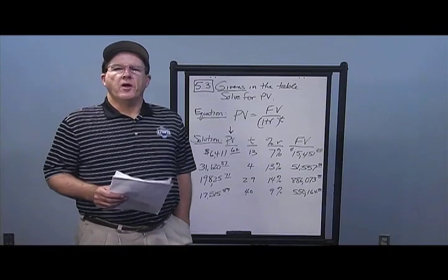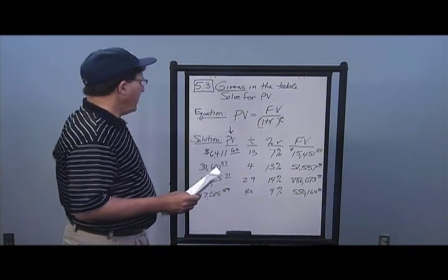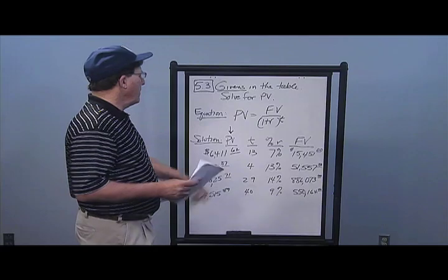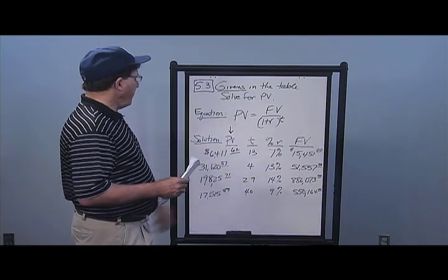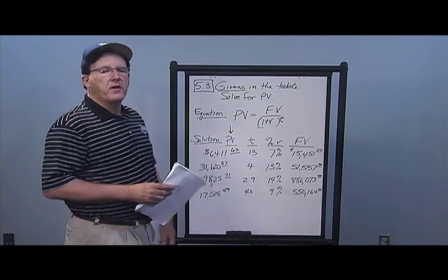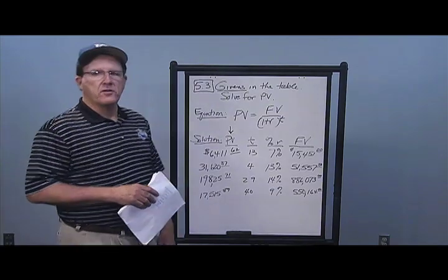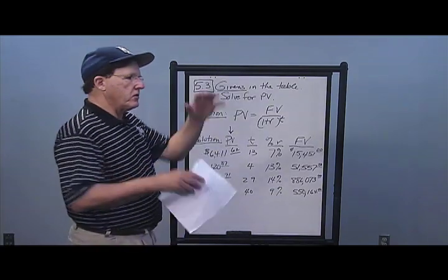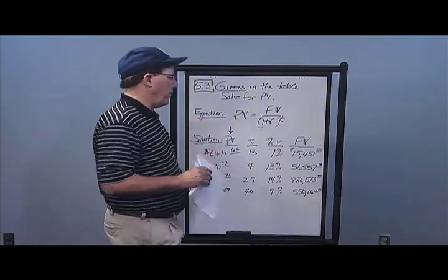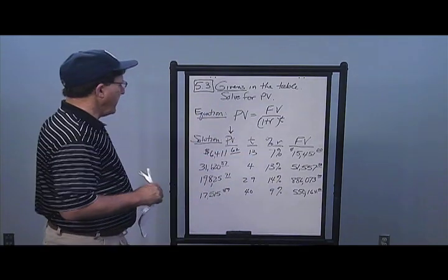In problem number three, we have the givens as shown. This time we're looking for present value. The equation is: present value equals future value over (1 + R) to the T — it's just rearranging the variables to solve for PV.